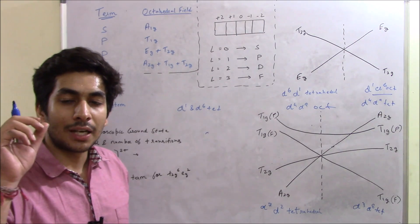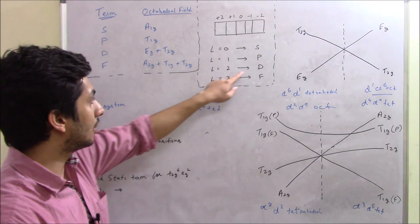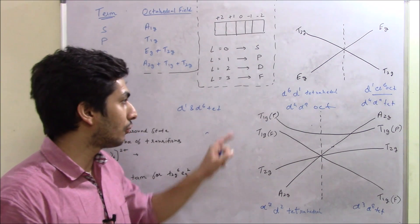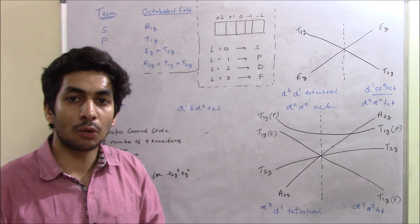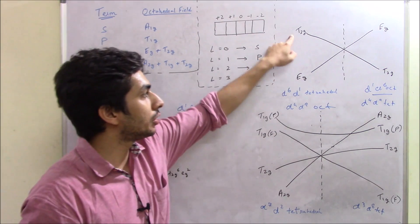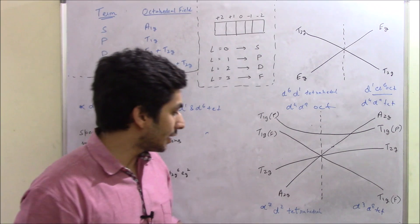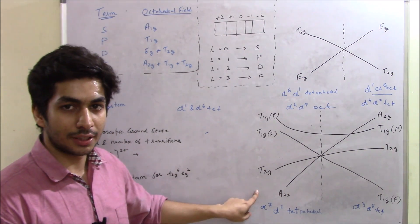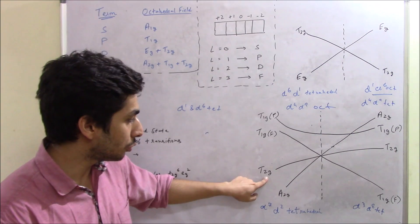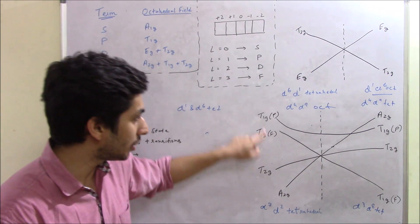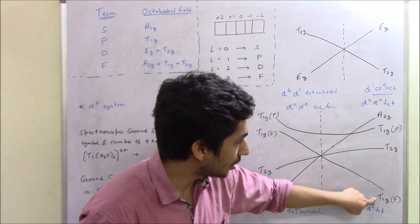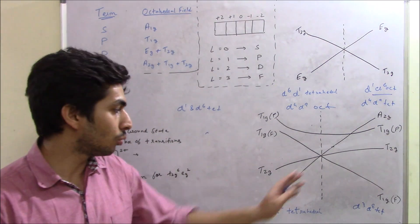For configurations giving the D term, there is only one d-d transition (EG to T2G or vice versa). For configurations giving the F term, there are three d-d transitions: for example, A2G → T2G, A2G → T1G(F), and A2G → T1G(P); or from T1G(F) → T2G, T1G(F) → T1G(P), and T1G(F) → A2G.